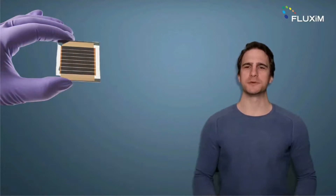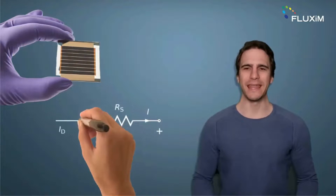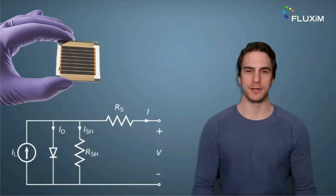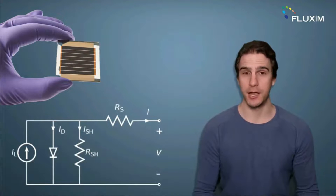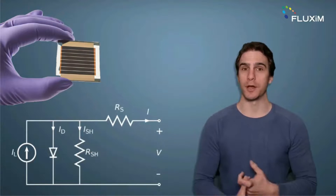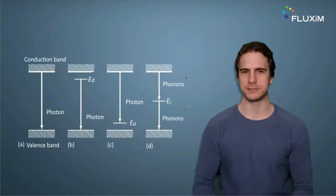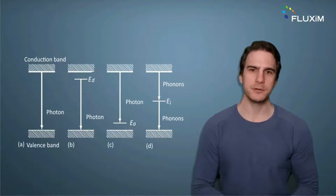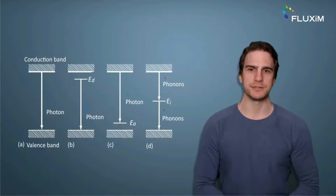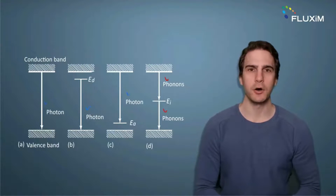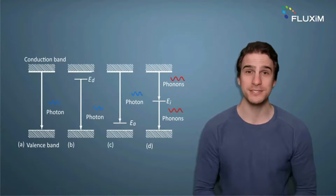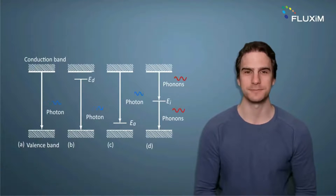So, you've just fabricated your best performing solar cell, and now you want to know everything about the charge carrier dynamics, how they recombine, the trapping rate, and so on. Transient photoluminescence measurements contain all the information you need in just a single curve. You just need to extract it.